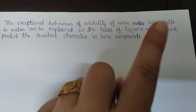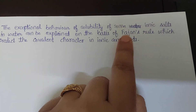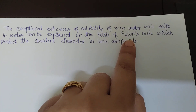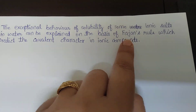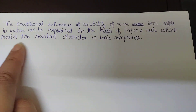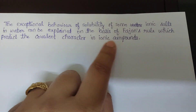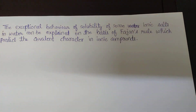We only need to address the solubility of salts here. Fajans' rule predicts the covalent character in ionic compounds. With that, we have completed question number six.